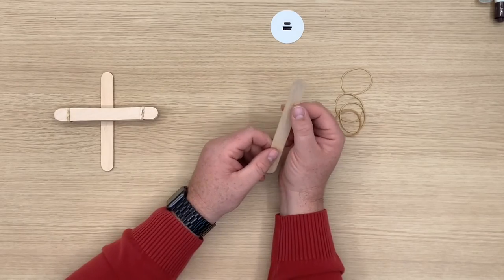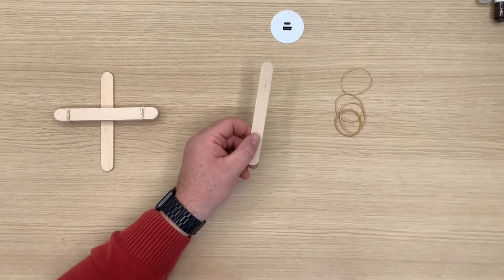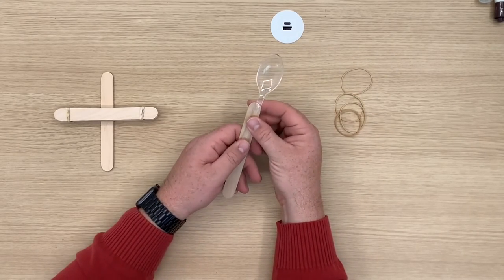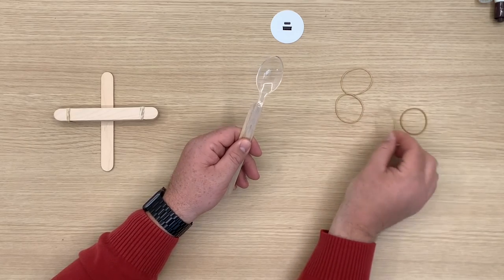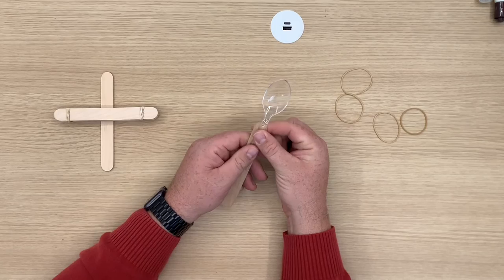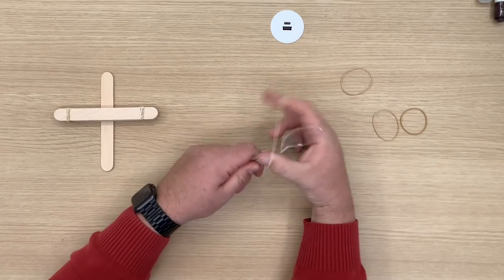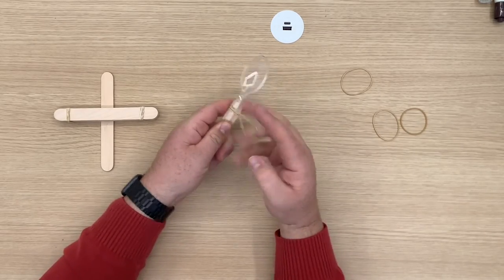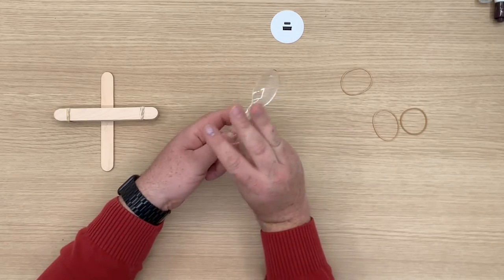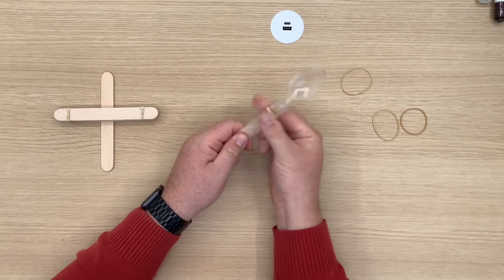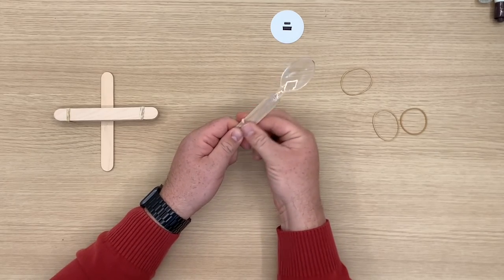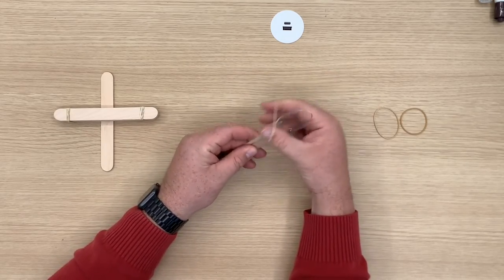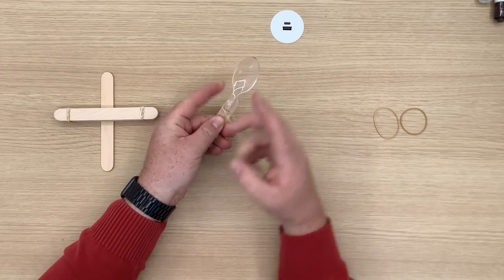And our next step is we're going to secure our spoon to our last craft stick. So we got our plastic spoon, and again we're going to use our rubber bands to secure it right here. So I like to use three rubber bands when I'm securing my spoon. I like to have one on top, one on the bottom, and one in the middle. So we'll slide this one down to the bottom. There we go. To me it just makes it so our spoon doesn't wobble as much.